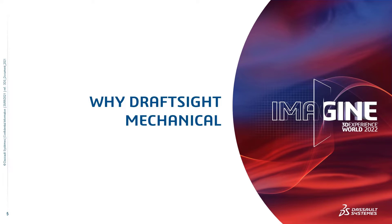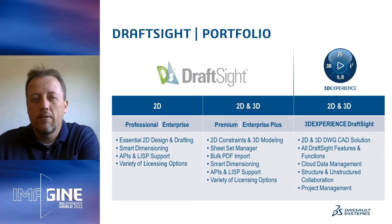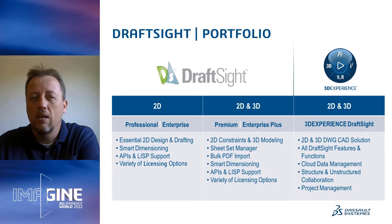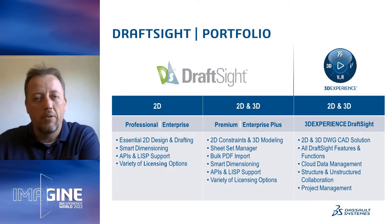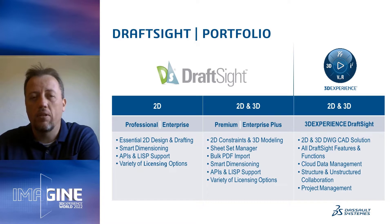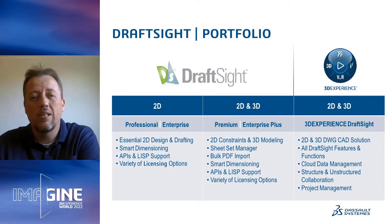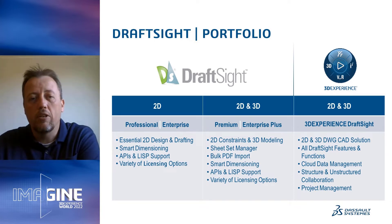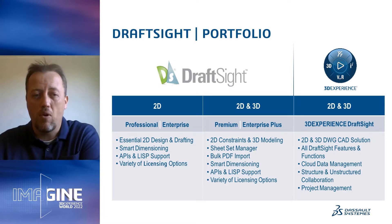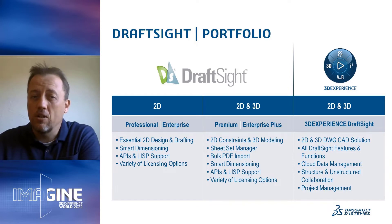Before I give you the details, it's important to understand the current DraftSight offerings. DraftSight is not just one product — it is an entire portfolio of solutions. We have DraftSight Professional and Enterprise, your 2D workhorse similar to AutoCAD LT. Then we have DraftSight Premium or Enterprise Plus, which gives you 2D constraints and 3D drawings. DraftSight Enterprise and Enterprise Plus are also available as a network license to allow multiple team members to share licenses.